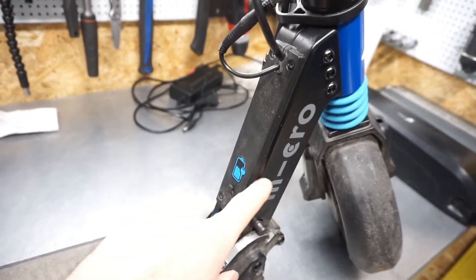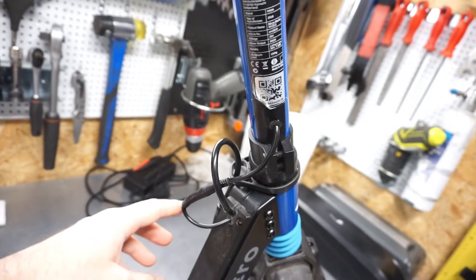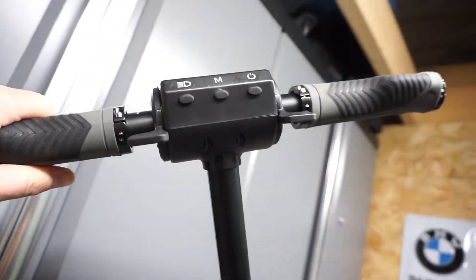You can see the compartment for the controller. Here is the cable going to the screen, which is on the top.